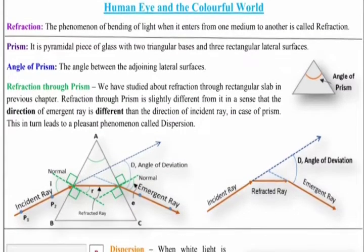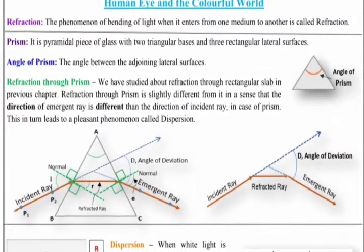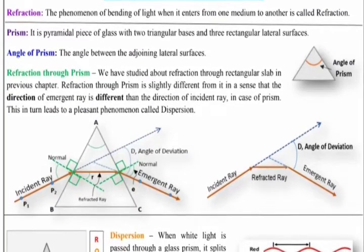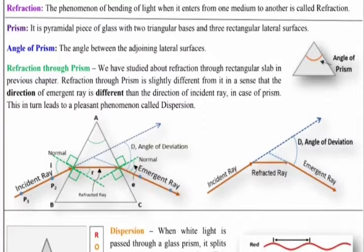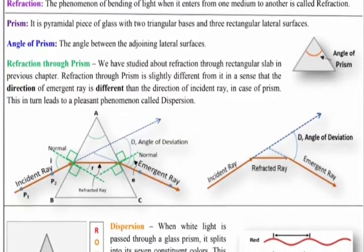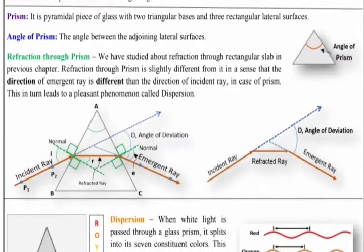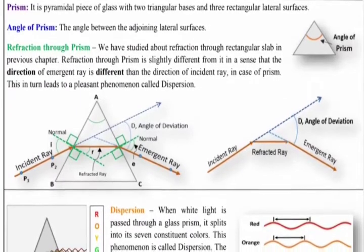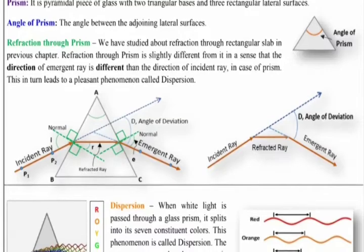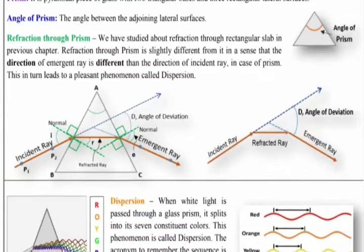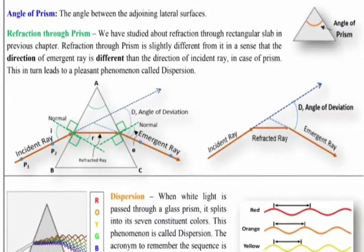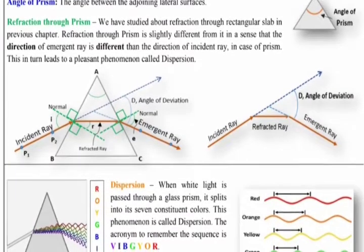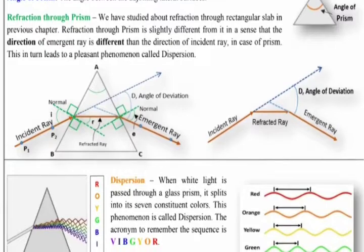As we can see, the incident ray and emergent ray have different directions, and the angle between them is the angle of deviation. When white light is passed through a glass prism, it splits into its seven constituent colors. This phenomenon is called dispersion. The acronym to remember the sequence is VIBGYOR: Violet, Indigo, Blue, Green, Yellow, Orange, and Red.